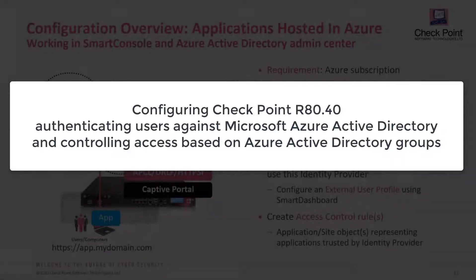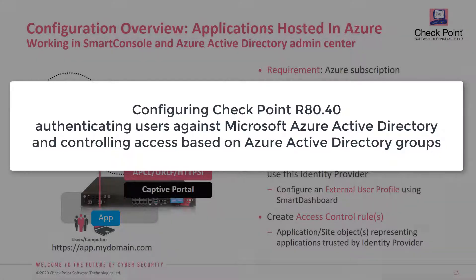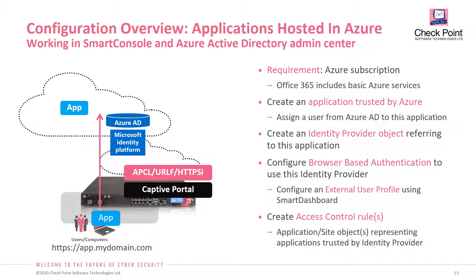In this video I explain how to configure authentication against Microsoft Azure Active Directory and retrieving groups. First you need a Microsoft Azure subscription. You can take an Office 365 basic subscription, even an evaluation, that includes Azure basic services. The evaluation license for Office 365 does not include a premium service to retrieve the groups, so that's an additional evaluation you need.